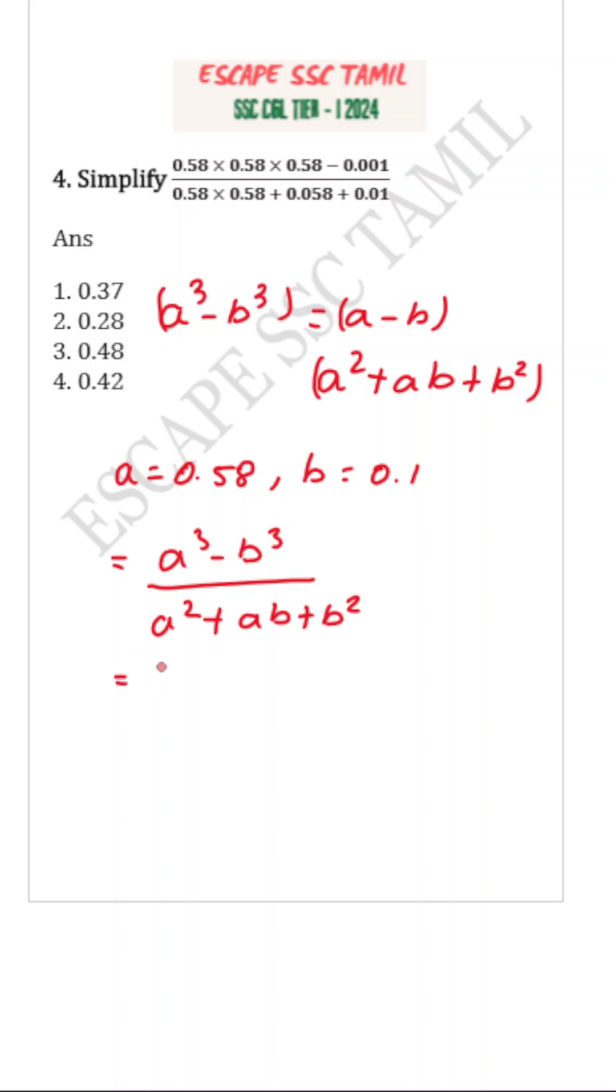So on substituting this a³ - b³, it will be (a - b)(a² + ab + b²) divided by the denominator a² + ab + b².